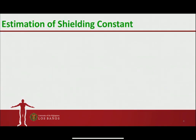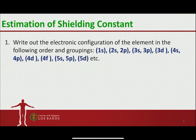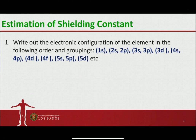Slater formulated several rules for estimating the shielding constant. The first thing we need to do is write down the Slater's electronic configuration, which is different from what we are used to. We follow a certain order and groupings as shown on the screen. We group 1s, then 2s and 2p, then 3s and 3p. A separate group would be 3d, and so on, going from 1s up to, say, 5s and 5p, increasing in energy. You then write the number of electrons contained in each orbital grouping as a superscript beside the parenthesis.